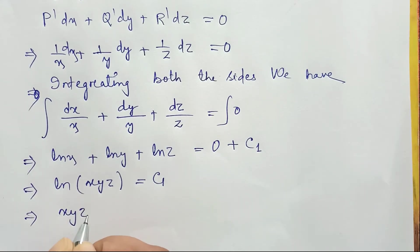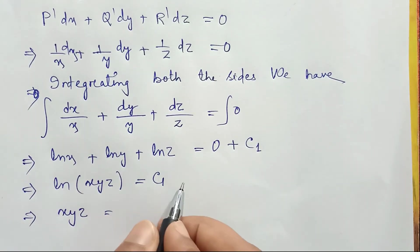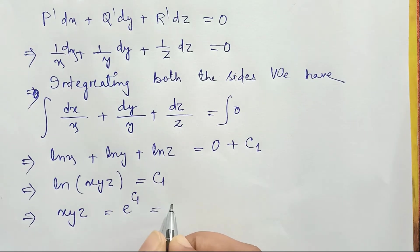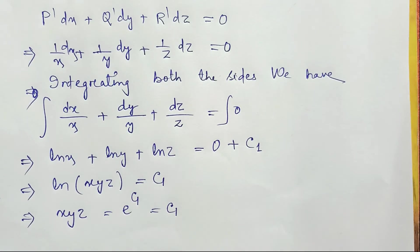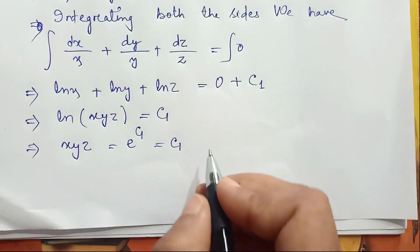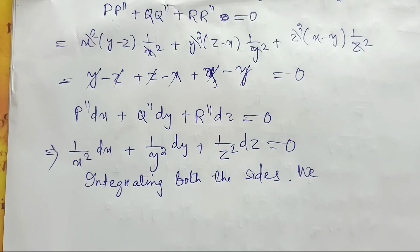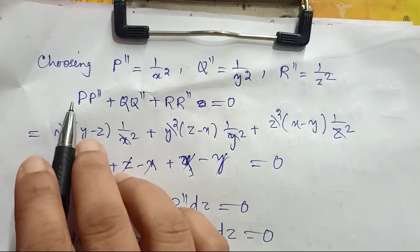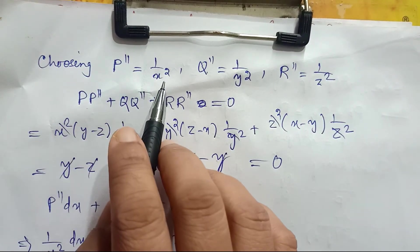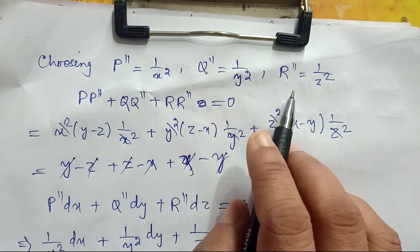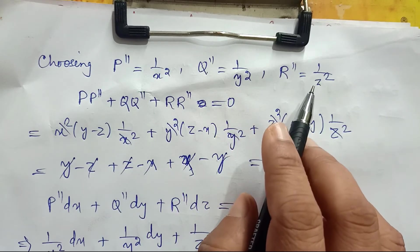Taking the exponential of both sides, xyz = e^c₁, which is some constant c₁. This is our first equation. Next, choosing p'' = 1/x², q'' = 1/y², and r'' = 1/z².